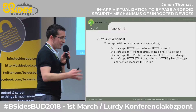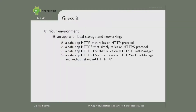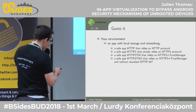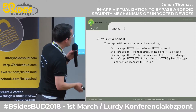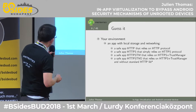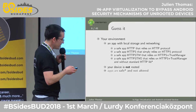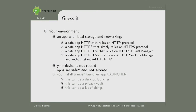Before explaining everything, I'll try to do a demo. We have an application that does four types of connections: pure HTTP, plain HTTPS without any security consideration, HTTPS with a custom trusted manager restricting the certificate set, and HTTPS with a further restricted certificate set using a custom HTTP library. The device is not rooted. This app doesn't have bad behavior in itself.